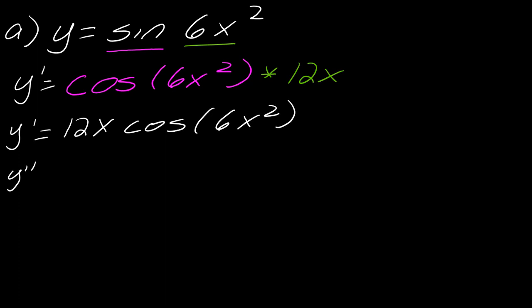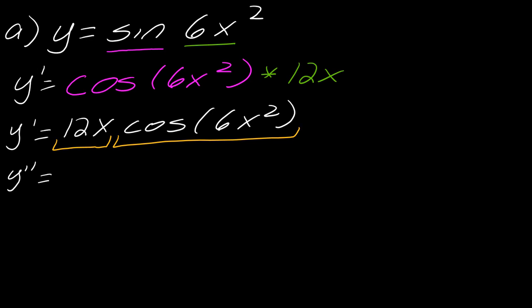Alright, so now for y double prime. Notice that in the first derivative we have effectively made this a harder problem because now we have to use the product rule. We've got two functions: 12x and cosine of 6x squared. Taking the derivative of 12x, the derivative of 12x is just 12, and then I leave the second function intact.